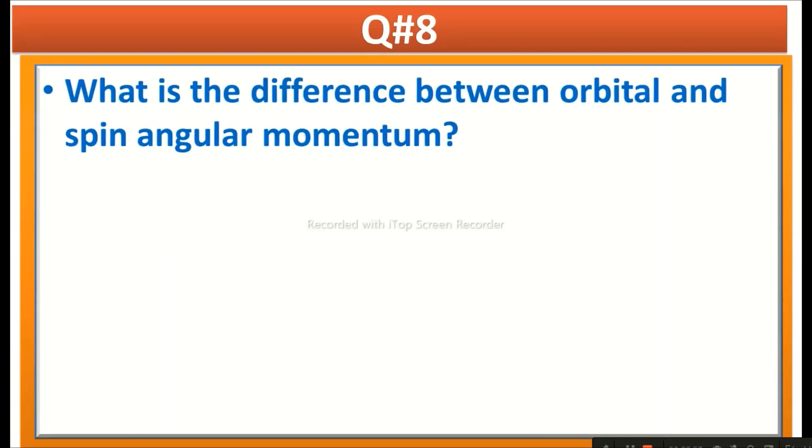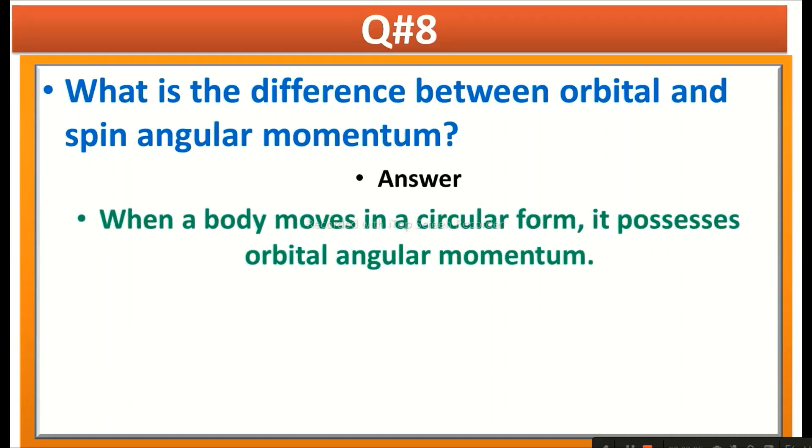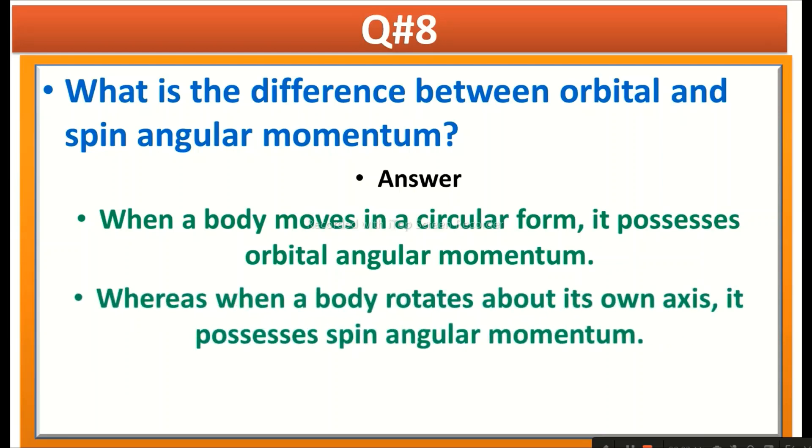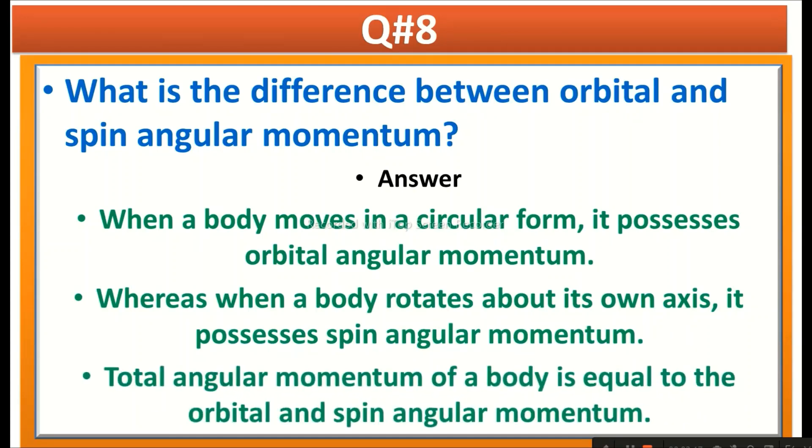The next question is: What is the difference between orbital and spin angular momentum? Answer is when a body moves in a circular form it possesses orbital angular momentum, whereas when a body rotates about its own axis it possesses spin angular momentum. So the total angular momentum of a body is equal to the orbital and spin angular momentum.